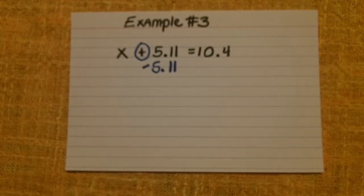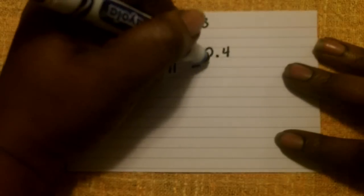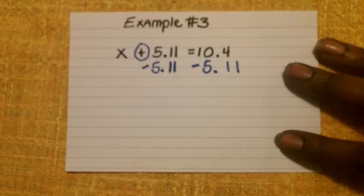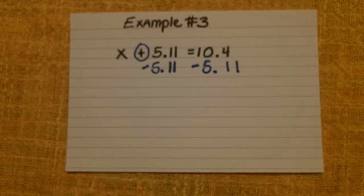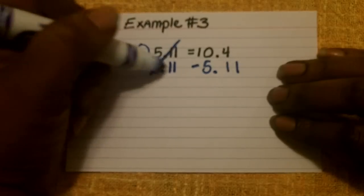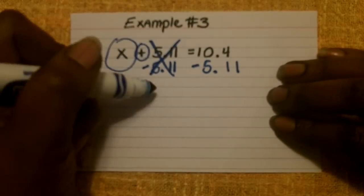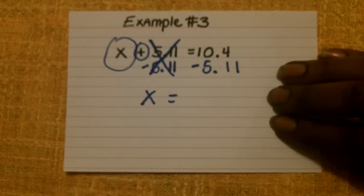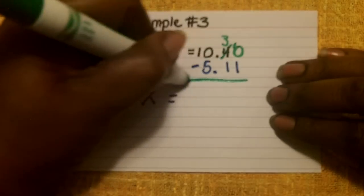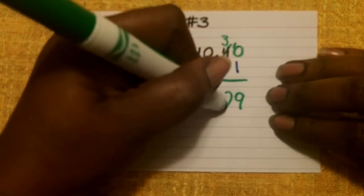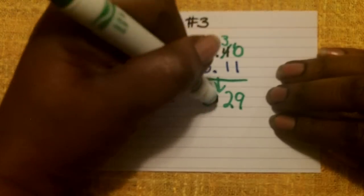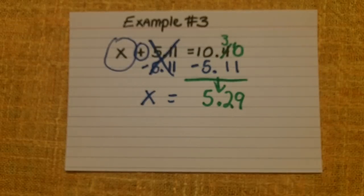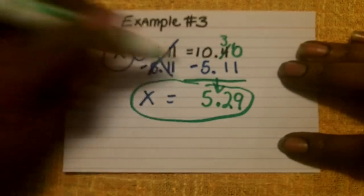So instead of adding 5.11, we are going to subtract 5.11 from both sides of the equation. By subtracting on both sides, we are isolating the variable, which was the whole goal. Now we have 10.4 minus 5.11. Thinking back to computation with decimals, I add a zero, borrow, and work through the subtraction. Bringing the decimal point straight down, X equals 5.29 is your solution.